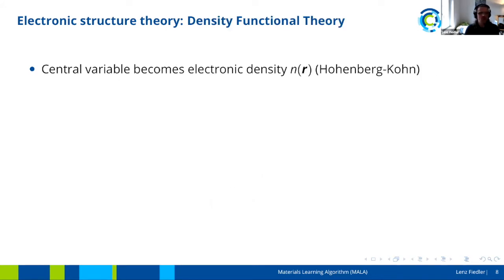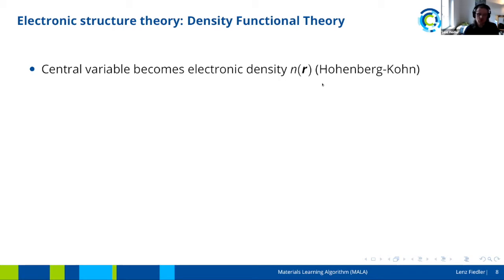The most popular approximation in this context is density functional theory. In DFT, the central variable becomes the electronic density, as given by the Hohenberg-Kohn theorem. This electronic density is defined at each point in real space, so R here is just one position in 3D space — not the collective positions of multiple electrons. This leads to a significant practical reduction in storage size needed for these approaches, and the density can be interpreted as a probability density of finding an electron at a certain point in space.